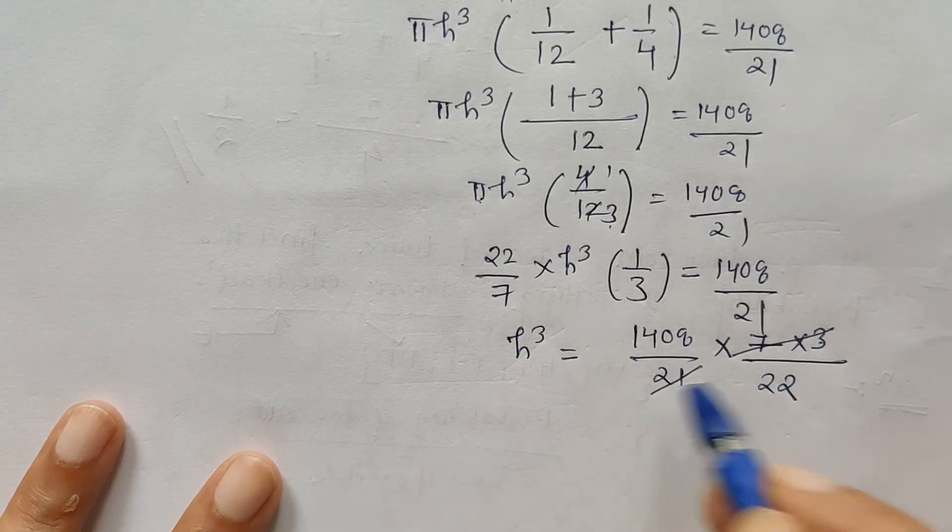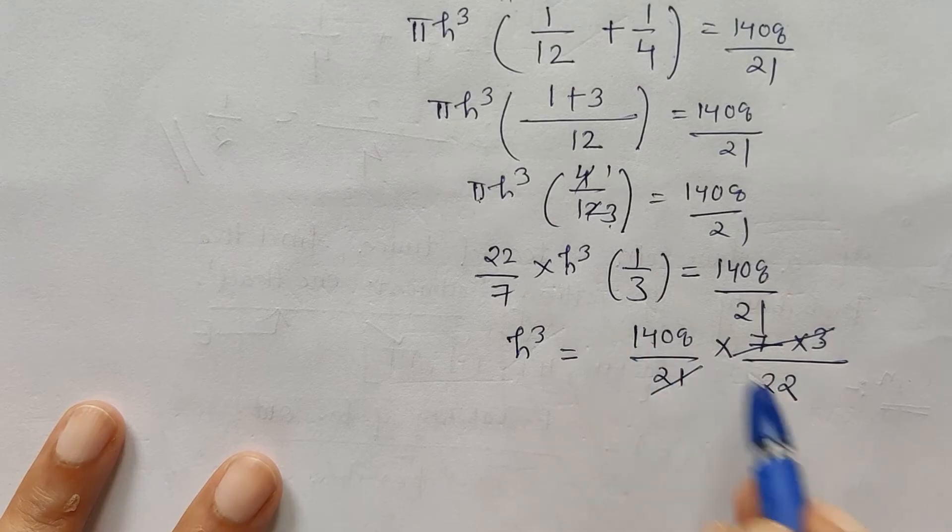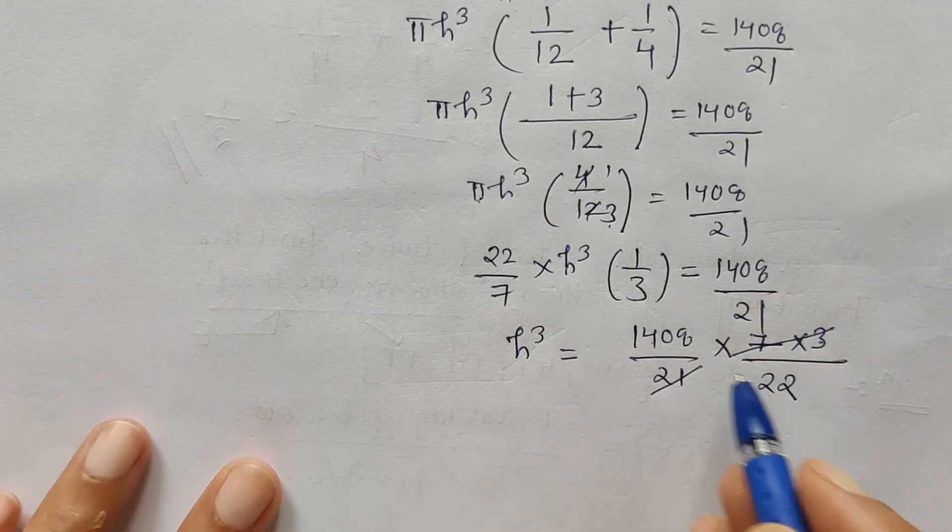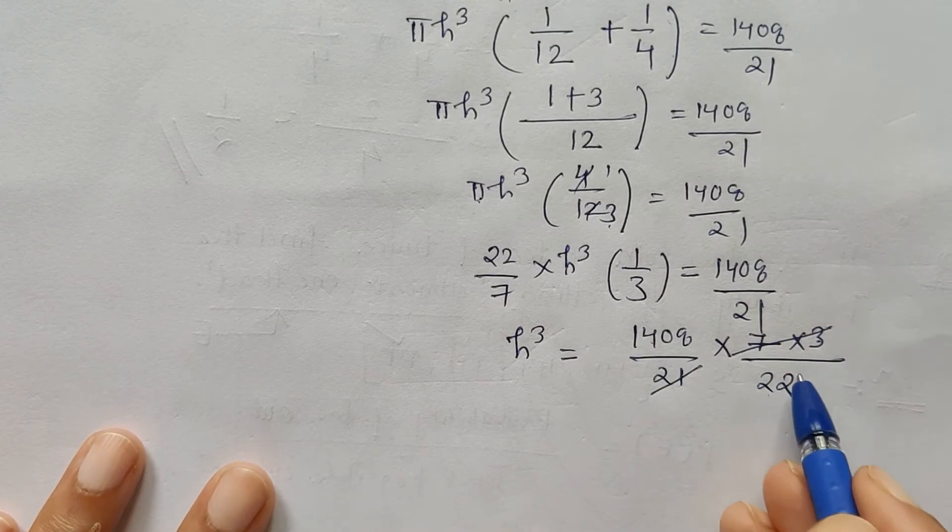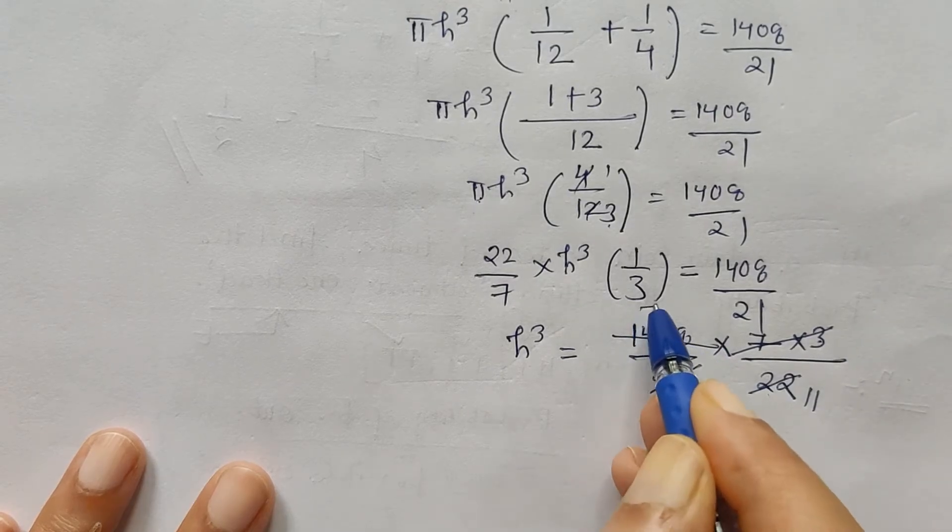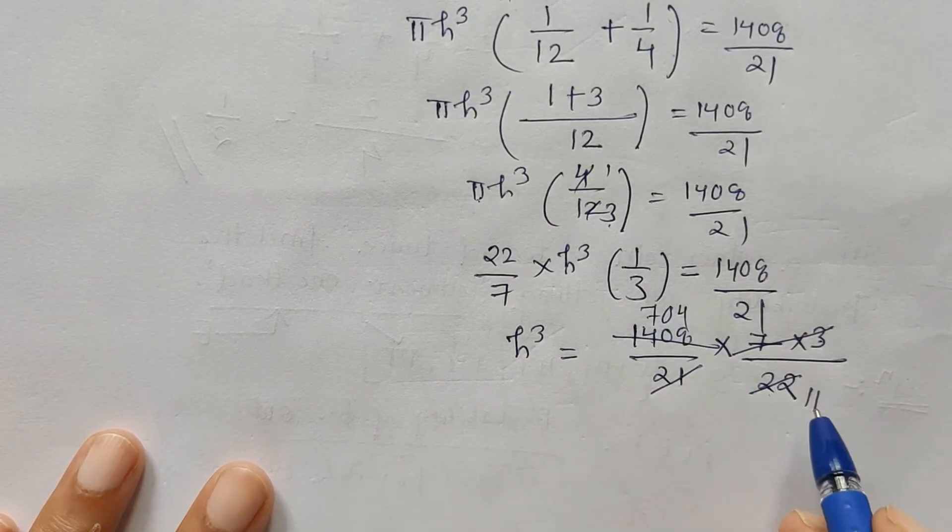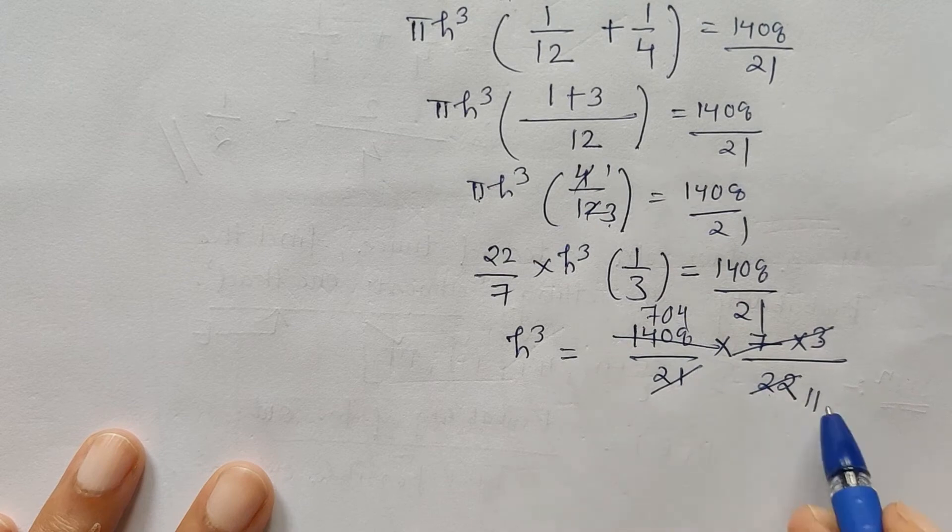So 7 goes into 21, and 21 gets cancelled. Now here also we can cancel the common factors like 2, 11, 22, 2, 7 is 14, 2, 0, 0, 2, 4 is 8, and further it can be cancelled.